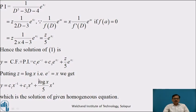Putting z = log x, that is e^z = x, we get y = c₁x^(-1) + c₂x⁴ + (log x / 5) · x⁴, which is the solution of the given equation.